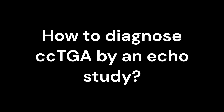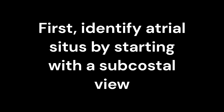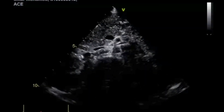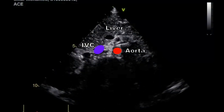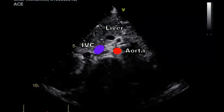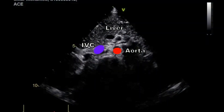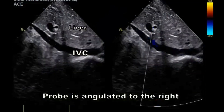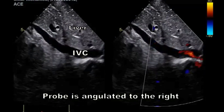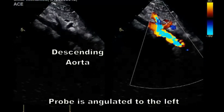How to diagnose CCTGA by an echo study. First, identify atrial situs by starting with a subcostal view. Notice that the aorta is on the left side of the spine and the IVC is on the right side. This is a normal abdominal situs, which corresponds to a normal atrial situs.